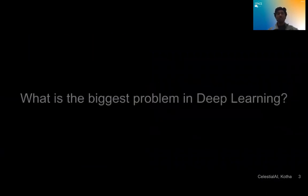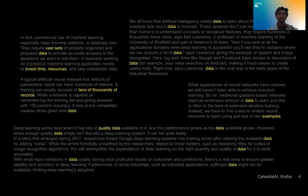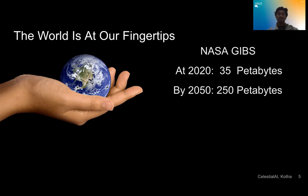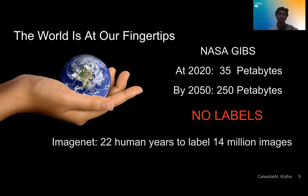So, let's start off with, what is the biggest problem in deep learning? Well, everybody seems to agree that the biggest problem in deep learning is data. We have a lot of data at NASA. There's 35 petabytes in the NASA GIBS image treasury, and there's 250 petabytes projected by 2050. However, all this satellite imagery has one fatal flaw. We have no labels. And we can't really go around collecting these labels as well. ImageNet itself took 22 human years to label 14 million images for a much simpler task than satellite imagery classification. And our data set is 200,000 times bigger. This is a problem.